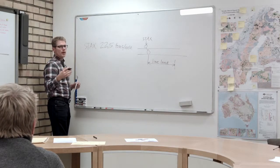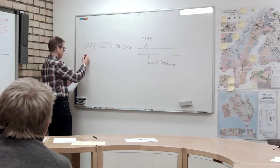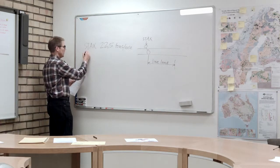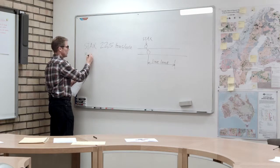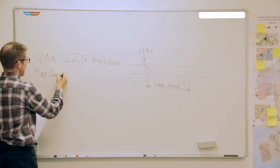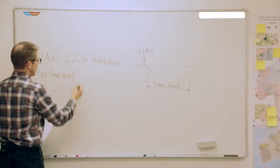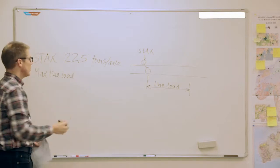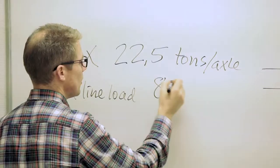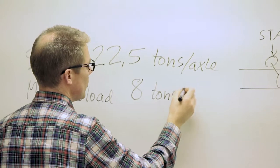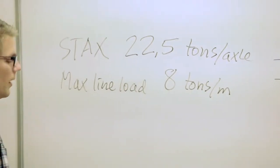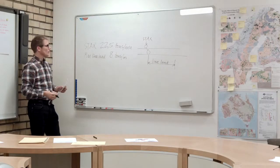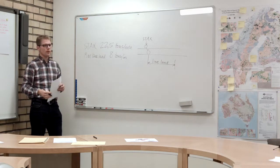STAX 22.5, that's for an example. We have up to 30 tons per axle and even up to 40 in some cases, that's very extreme. Maximum line load, let's take an example: eight tons per meter.